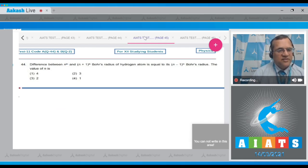Question 44: The difference between the nth and (n+1)th Bohr radius of hydrogen atom equals the (n-1)th Bohr radius. Find the value of n. The solution: r(n+1) - r(n) = r(n-1). We know that in general, r(n) = 0.53 angstroms × n². Filling this in: